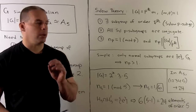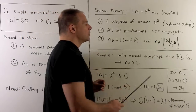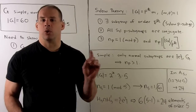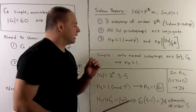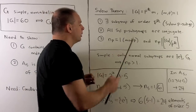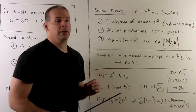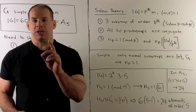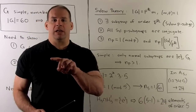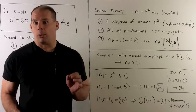Now, if our group is simple, the only normal subgroups are the identity subgroup and the group itself. So when we have a divisor of the order of the group, N_P is going to be greater than 1. If it were equal to 1, we'd have a unique Sylow subgroup of a given order, and it would be normal.